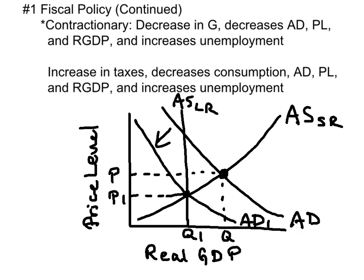A contractionary fiscal policy is most appropriate during times of inflation. A contractionary fiscal policy can be a decrease in government spending or an increase in taxes. A decrease in government spending will decrease aggregate demand, price level, and real GDP, and this will increase unemployment. An increase in taxes will decrease disposable income and therefore consumption, aggregate demand, price level, and real GDP, while raising unemployment.